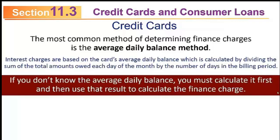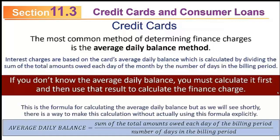Finance charges are easy to calculate if you already know the average daily balance. If you don't know the average daily balance, you have to calculate it first, and then use that result to calculate the finance charge. The formula for average daily balance is the sum of the total amounts owed each day of the billing period divided by the number of days in the billing period, but you don't need to use this formula explicitly if you're willing to use another approach I'll show you shortly.